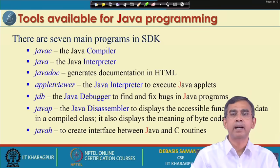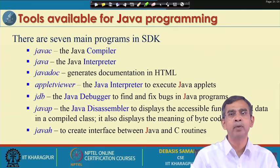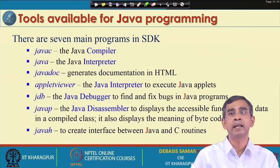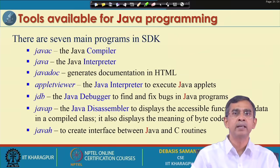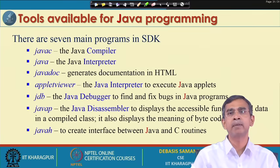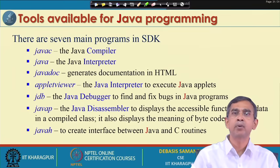Then there is the Java debugger. If you have a very large set of classes in your program and it is not giving the desired output, you may have to debug — find where the error is. For this debugging, the JDK provides a very efficient and handy tool called jdb, the Java debugger, for fixing errors in the program.